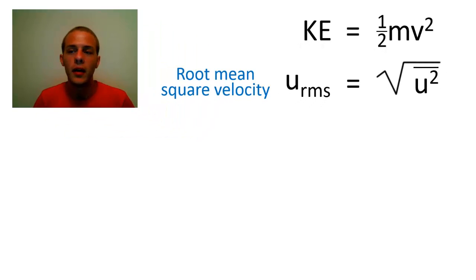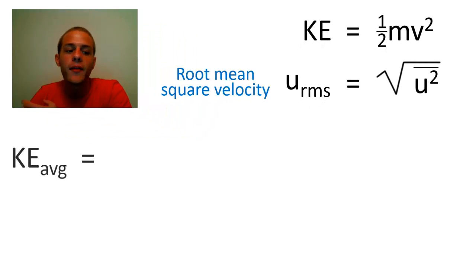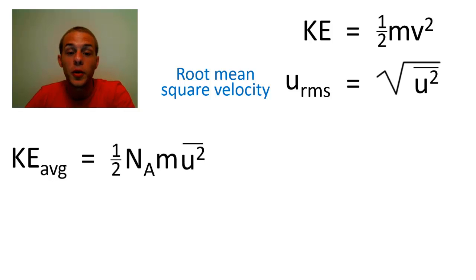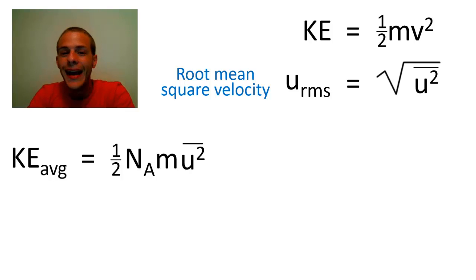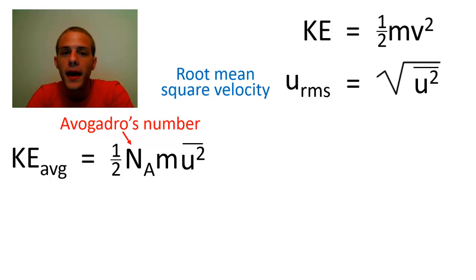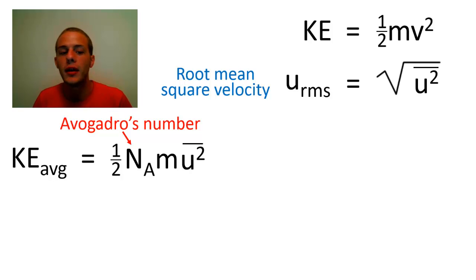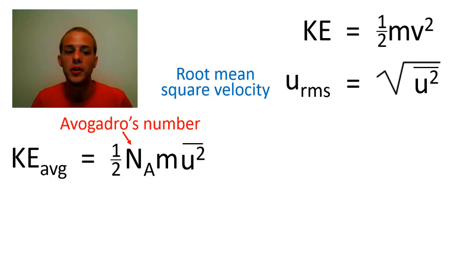In order to do that, we set up an equation that equates the average kinetic energy to the expression: one half times N sub A times M times U-squared-bar. M is the mass, U-squared-bar is the average of the squares of the particle velocities, and capital N sub A is Avogadro's number — 6.022 times 10 to the 23rd particles per mole. So average kinetic energy equals one half times Avogadro's number times mass times U-squared-bar. We can then equate this to another expression for average kinetic energy.